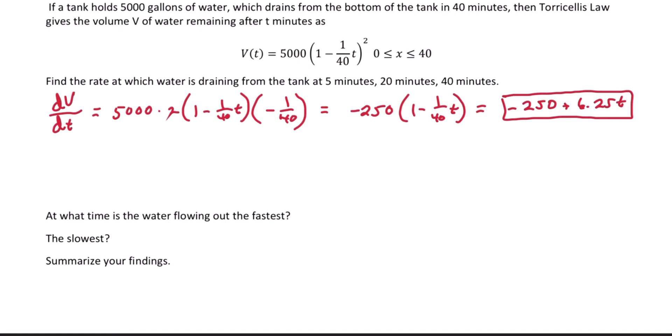So now we can answer the question. dV/dt evaluated at 5 minutes. Plug that 5 into the formula, and we get negative 218.75, and that is gallons per minute.